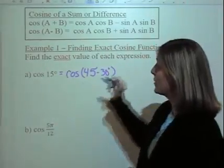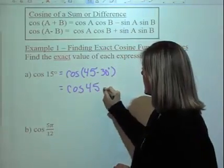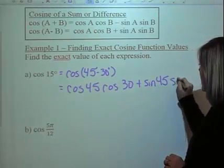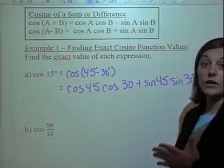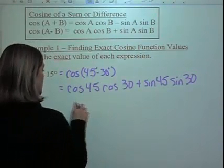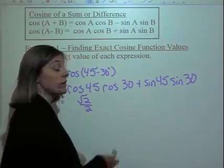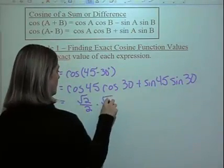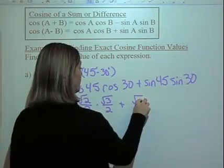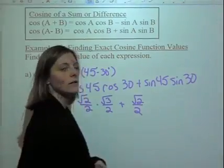So we're going to use the difference formula: cosine of 45 times cosine of 30 plus sine of 45 times sine of 30. We can use our unit circle to find those values. Cosine of 45 is √2/2, cosine of 30 is √3/2, sine of 45 is √2/2, and sine of 30 is 1/2.